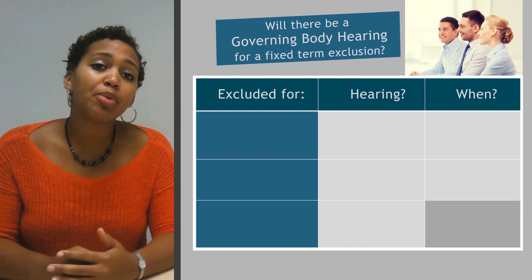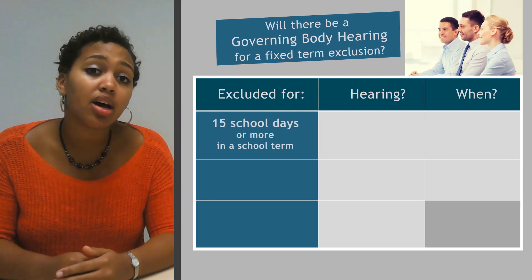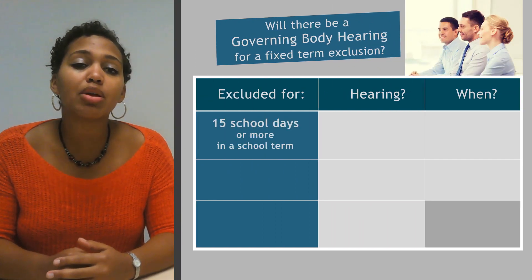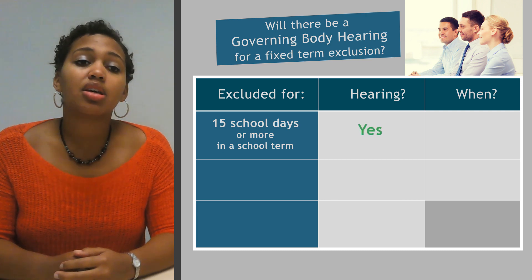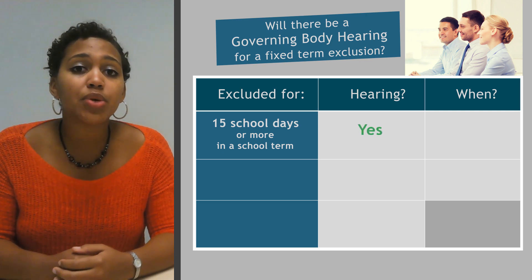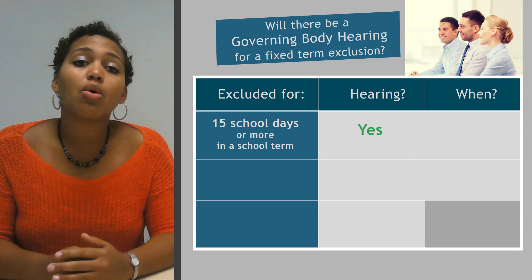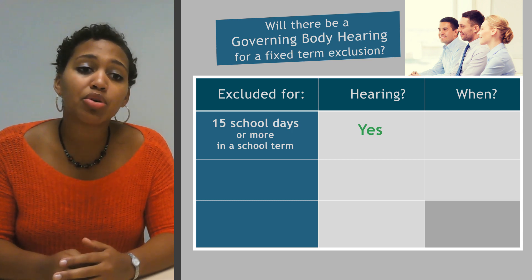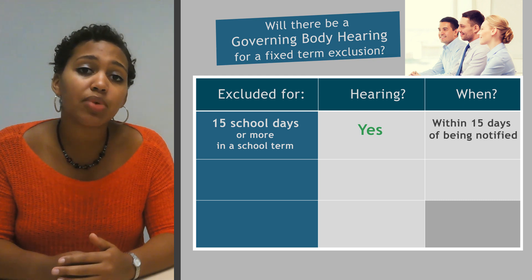If the pupil's exclusion means that they will be excluded for a total of 15 days or more in a term, the governing body must meet to consider that decision. This 15 days can be in a row or a number of shorter exclusions that add up to 15 school days. Once the governing body receives notice of this exclusion, it must arrange to meet within the next 15 days.